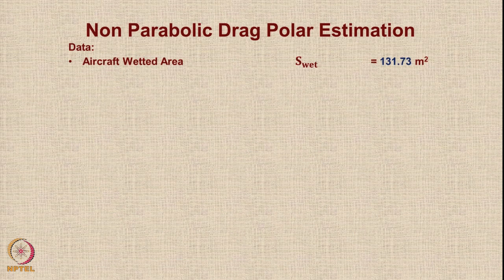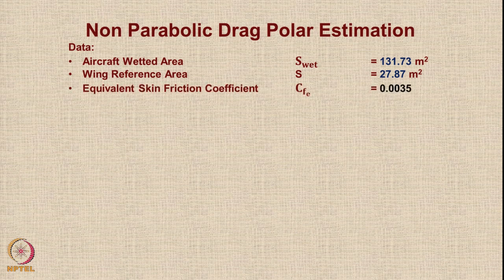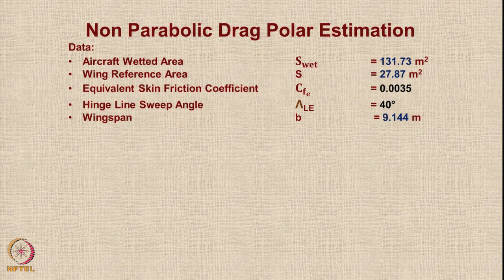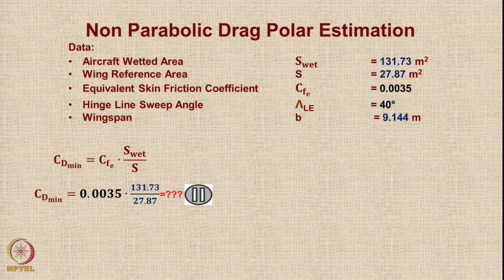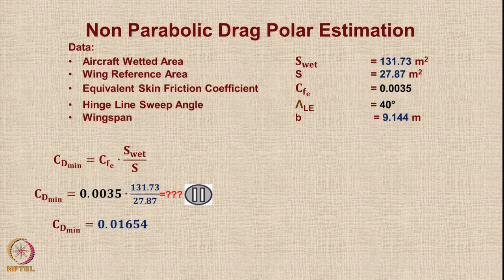Returning to the non-parabolic drag polar estimation: the wetted area is 131.73 square meters, wing reference area is 27.87 square meters, CFe is 0.0035, leading edge sweep is 40 degrees, and wingspan is 9.144 meters. CDmin = CFe × Swet/S = 0.0035 × 131.73 / 27.87. The CL minimum drag for the profile drag coefficient comes out to be 0.01654.